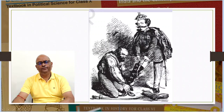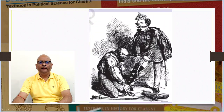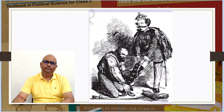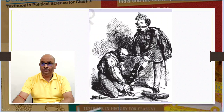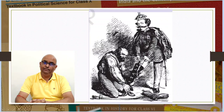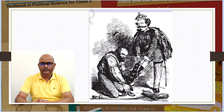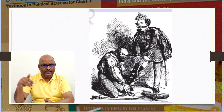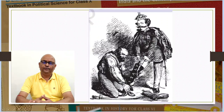Figure 15 shows Garibaldi helping King Victor Emmanuel II of Sardinia-Piedmont to pull on the boot named Italy. The artist has portrayed Garibaldi as holding the base of the boot so that the king can enter it from the top.